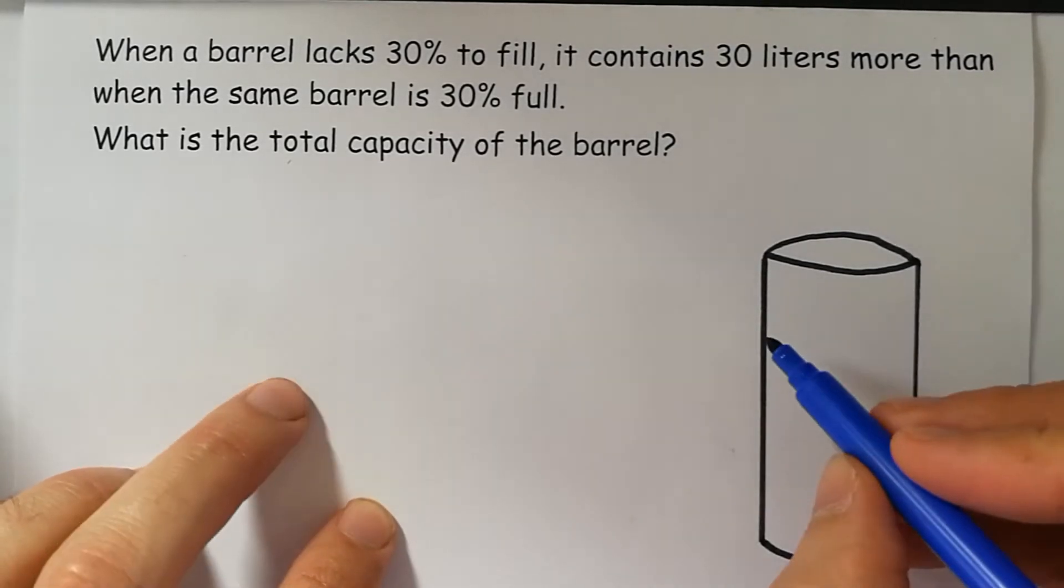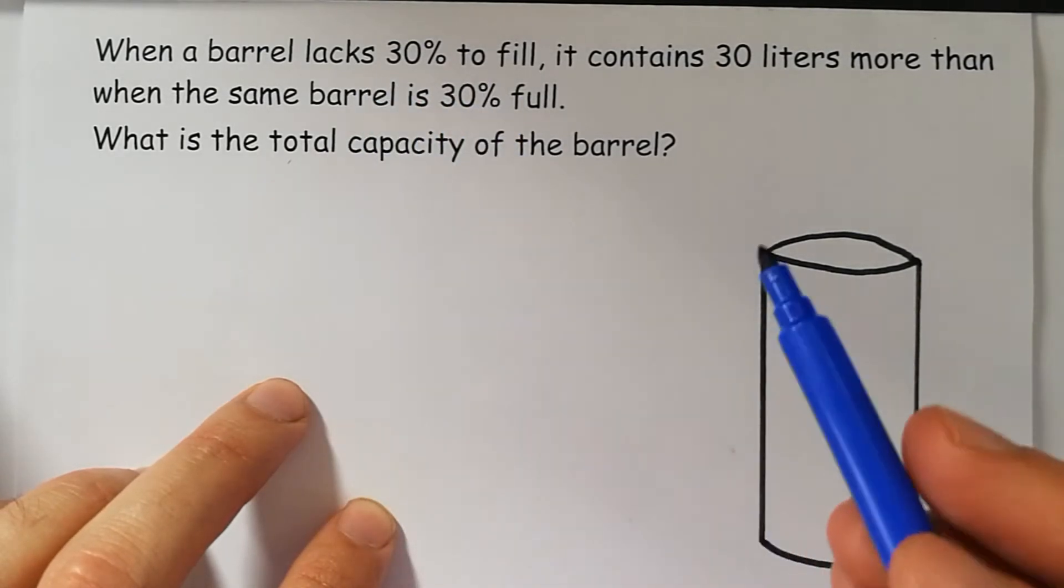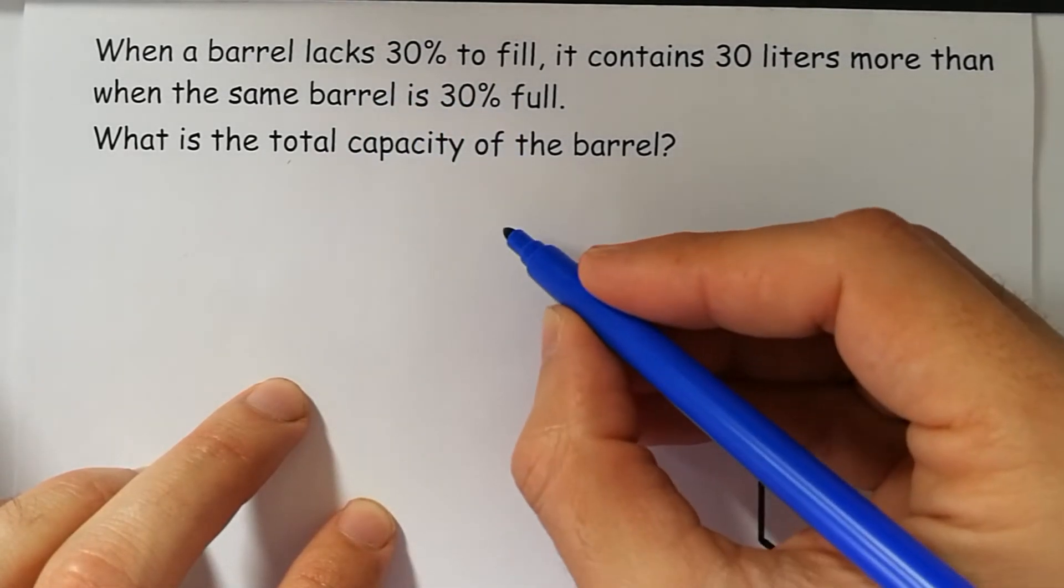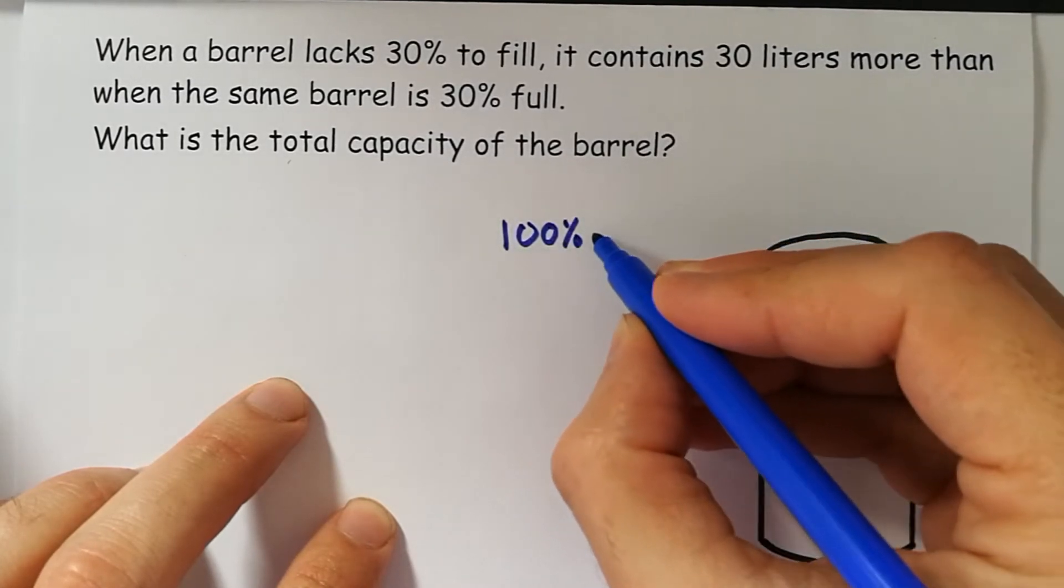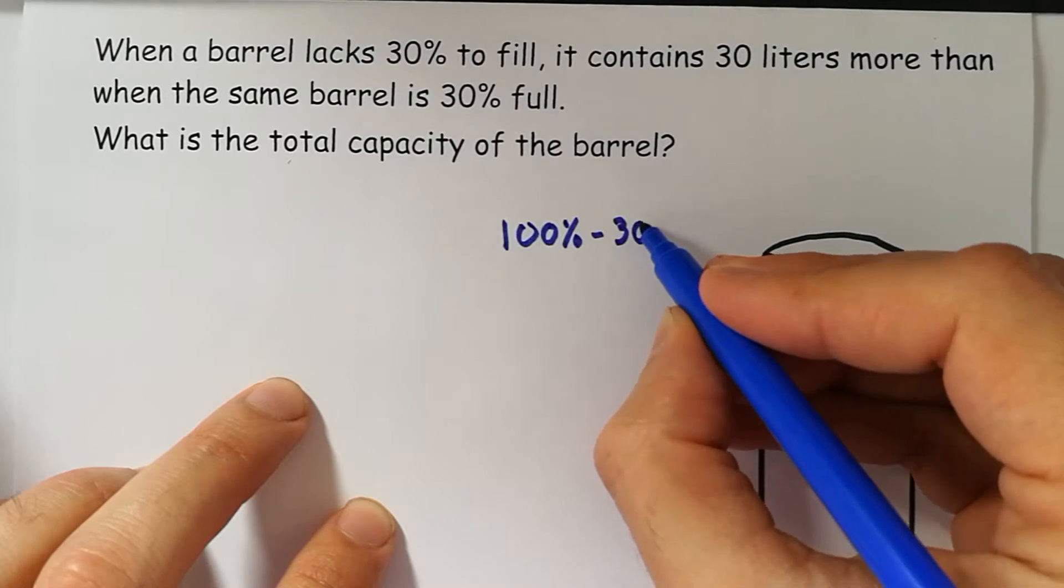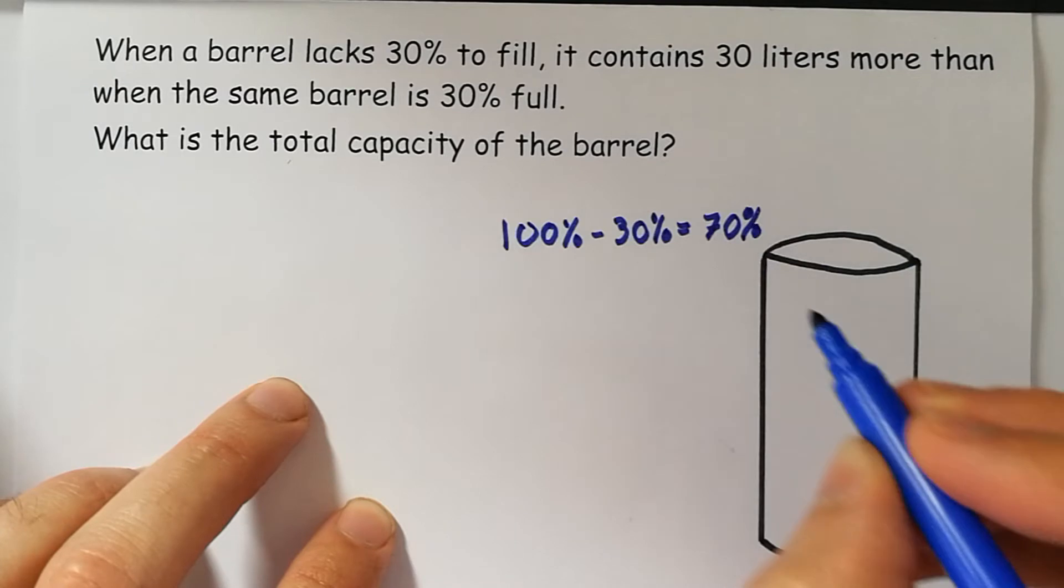In the first situation, our barrel lacks 30% to fill. This is the same as if it lacks 30%, it's 100% minus 30%, it's 70% full.